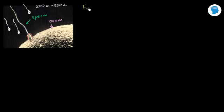So the sperm cell came from our father. The egg cell — this is all happening inside of our mothers. The egg cell is from our mother. Now, once this happens, let's talk a little bit about the terminology. Once these two fuse, we call the process of them fusing fertilization.